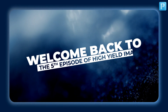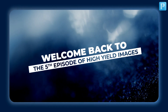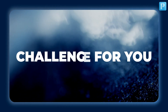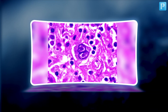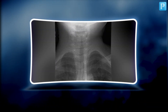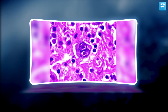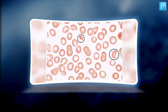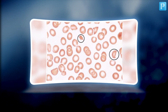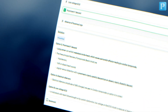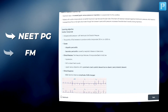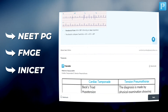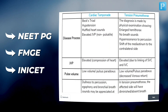Welcome back to the 5th episode of High Yield Images. Today we have got an exciting challenge lined up for you. We'll reveal the images and the names of the associated diseases and it's your task to decode the key findings. These topics are essential and have appeared multiple times in the past NITMG, FMGE, and INICD exams. So let's dive right in.